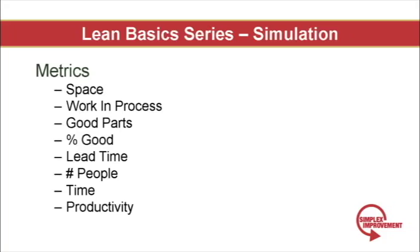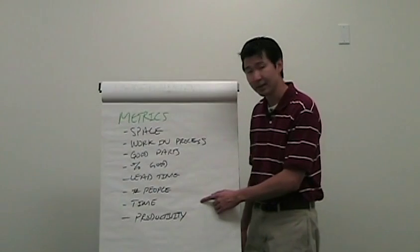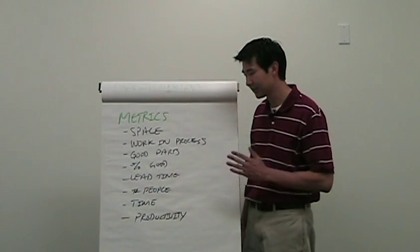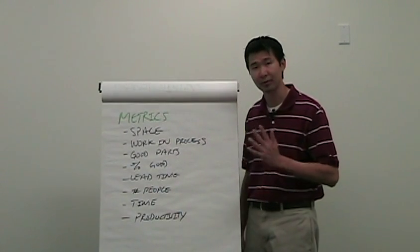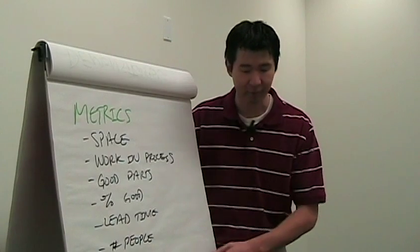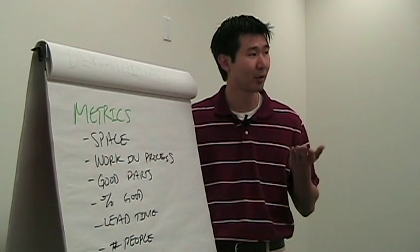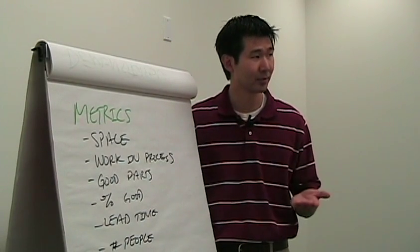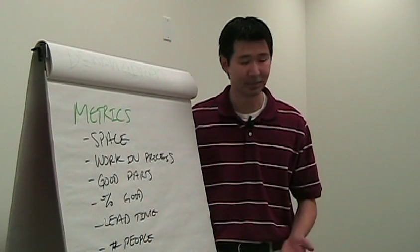Then we have number of people. We start off with six, but as the simulation goes on, they learn to decrease that number. Next there's time — all these simulations are going to run for five minutes. And last we have productivity, which is a measure of good parts divided by people divided by time.